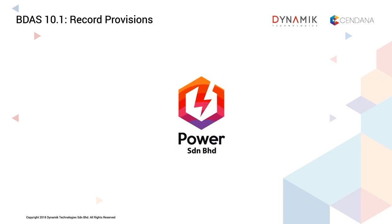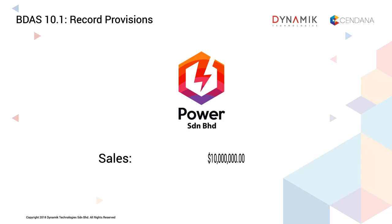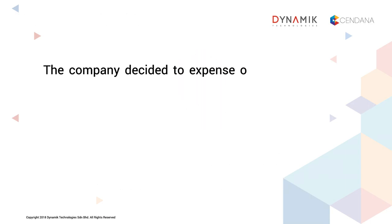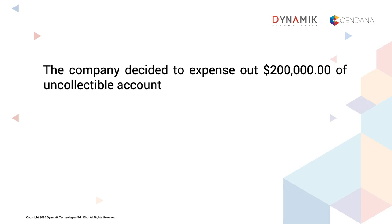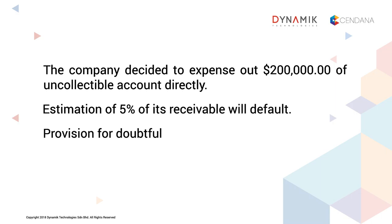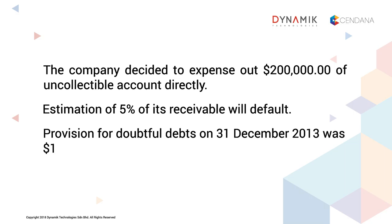Power Sandrian Burhat Company sales amounted to $10 million, out of which $1 million remained outstanding at the year-end. The company decided to expense out $200,000 of uncollectible accounts directly. Based on past experience, Power Sandrian Burhat estimated that 5% of its receivables will default. Provision for doubtful debts on 31st December 2013 was $10,000.